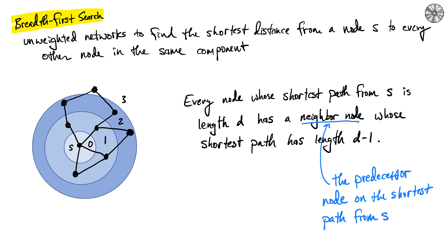In the next video we'll take a look at the weighted case. This relies on the observation that if there is a shortest path from S to some chosen node, which happens to be a distance three away, then that node has to have some neighbor with a distance from S that is one minus that distance. So if this distance is D, then one of its neighbors must have distance two. This node is called the predecessor node along the shortest path from S to a particular node.